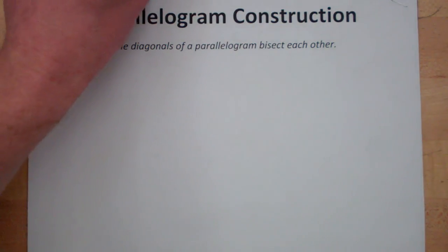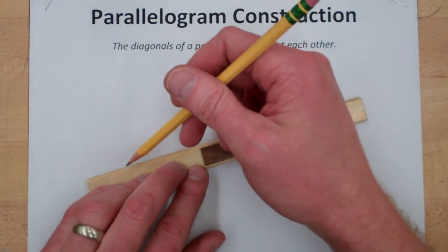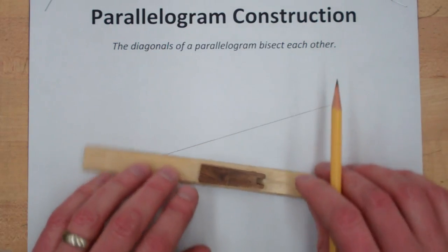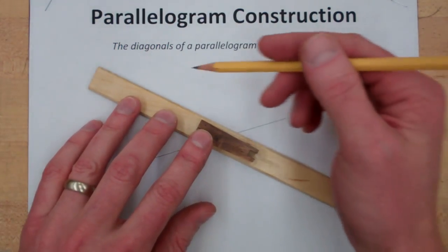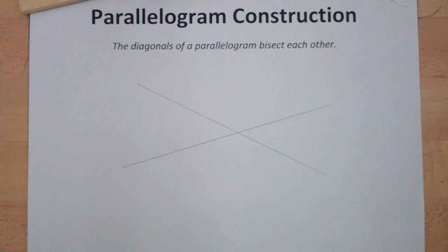So what we're going to do is start with not the sides of the parallelogram but the diagonals. I'm just going to draw two lines that intersect each other. This will determine how skinny or the height of the parallelogram.